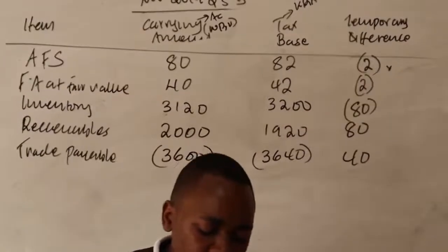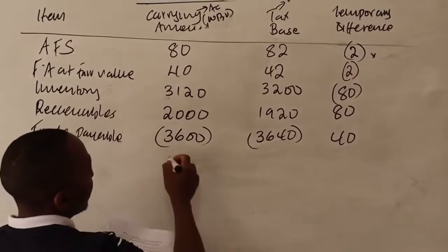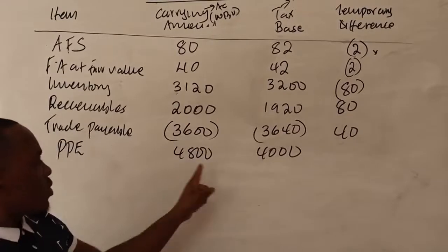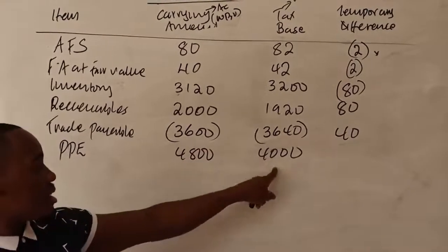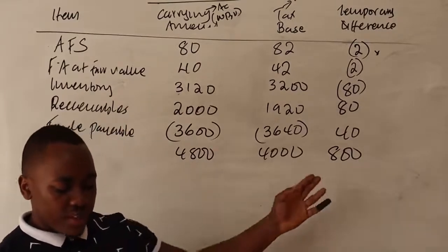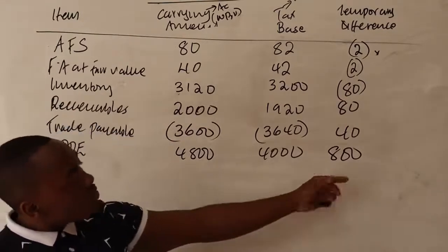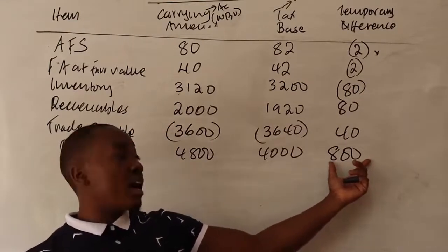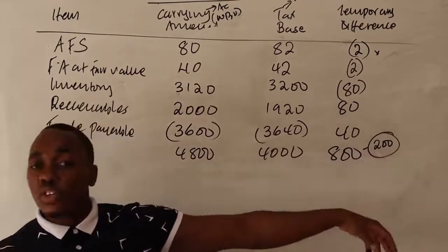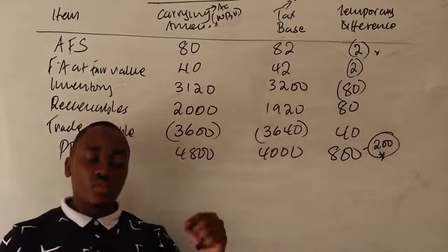Note five — PPE. PPE has a carrying amount of 480 million and a tax base of 400 million, giving a temporary difference of 800. We are also told that some land and buildings were revalued upward by 200 million during the year. Of the 800 temporary difference, 200 arises from revaluation. Revaluation changes for PPE are subject to special deferred tax treatment.